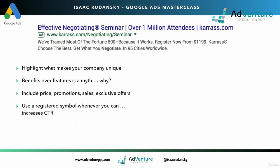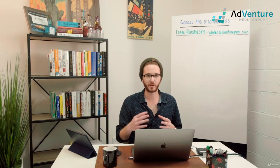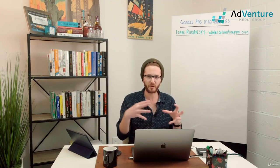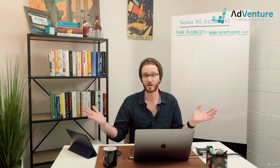Use a registered symbol as much as possible like we have over here in the top example of effective negotiating. It does increase click-through rate. Again, it lends that legitimacy, it lends that social proof. So when you have a registered symbol and you say we have a million attendees, that's a powerful potent combination.